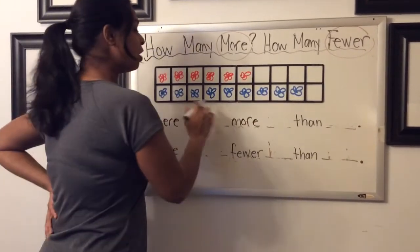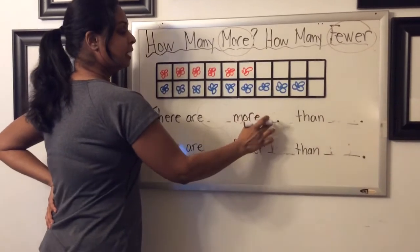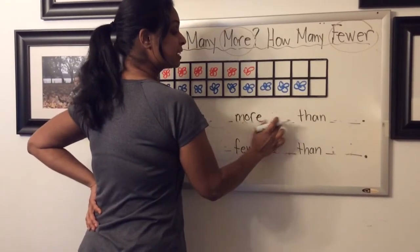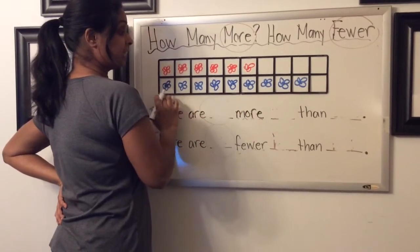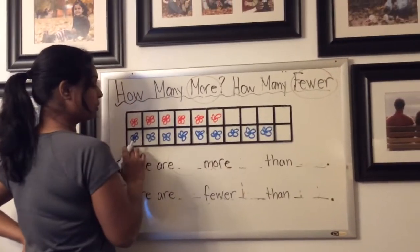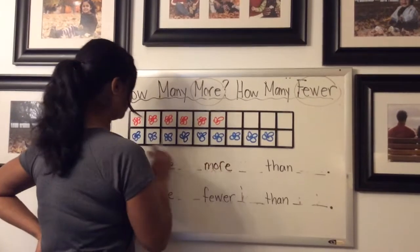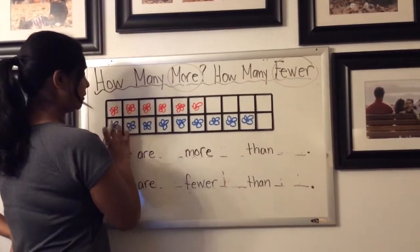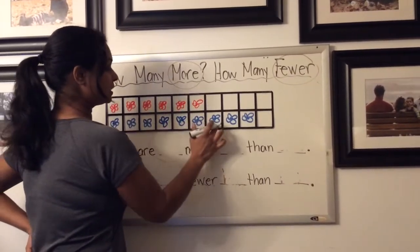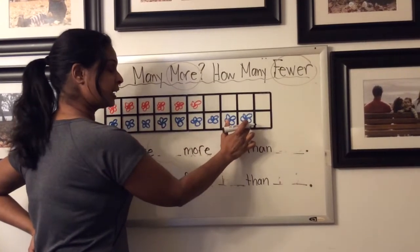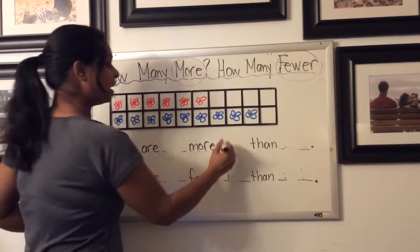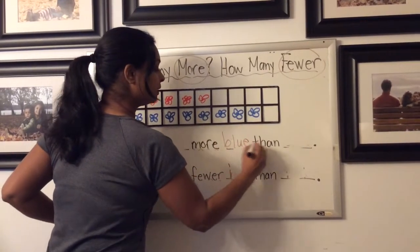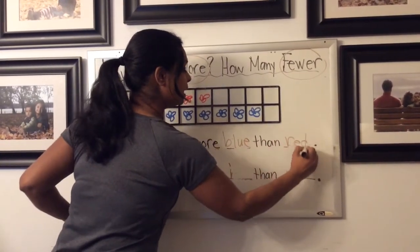So there are how many more this color than that color. So again, I'm looking at that word more and I can see that it's the blue. So I know that there are... And then so if we count them up one, two, three, four, five, six, seven, eight, nine blue, which I can see is more and then one, two, three, four, five, six red. So there are this many more blue than red this time.